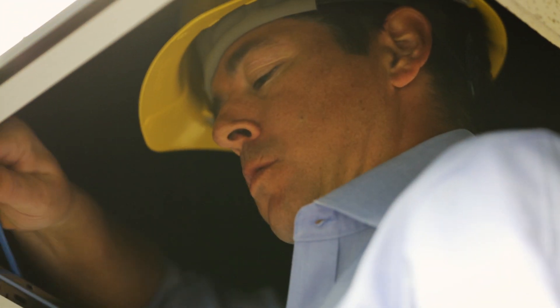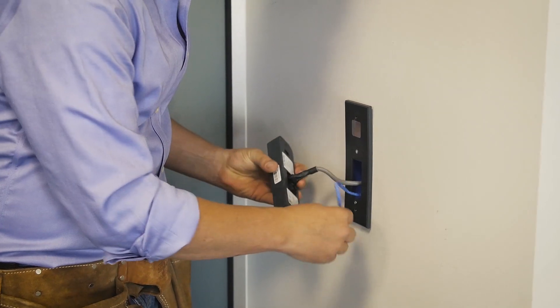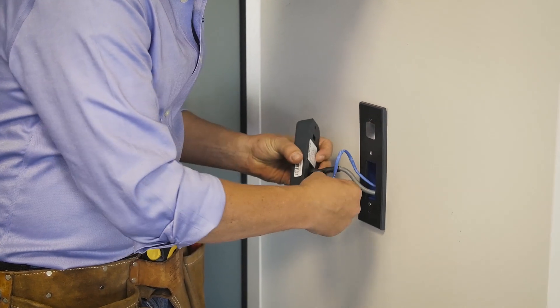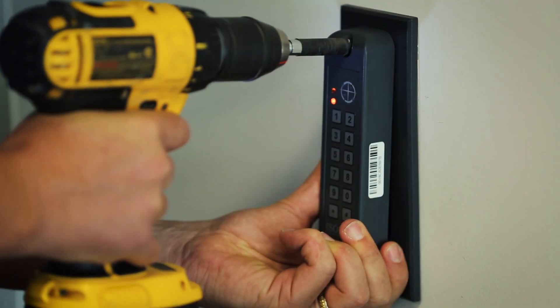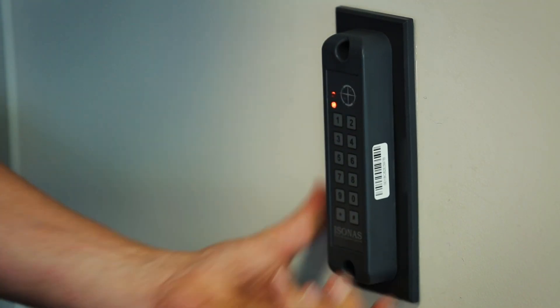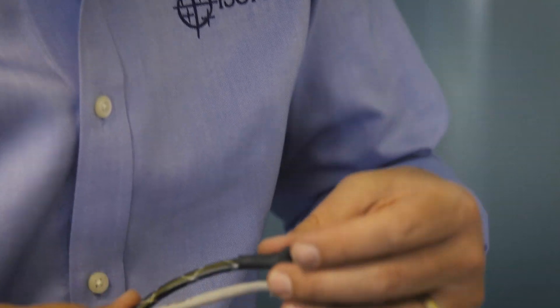To install an iSonIS reader controller, simply run a category 5 cable to the door, wire your door lock, request to exit button, and any other accessories with our simple pigtail connector. Our pure IP reader controllers provide 600 milliamps of power for the door accessories.